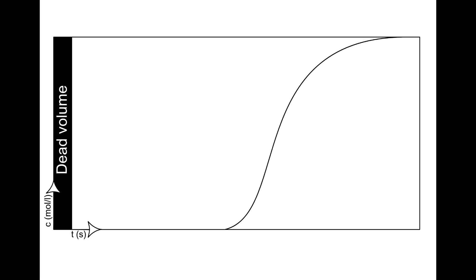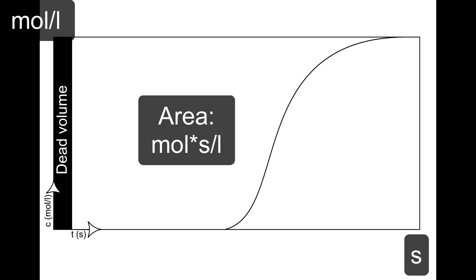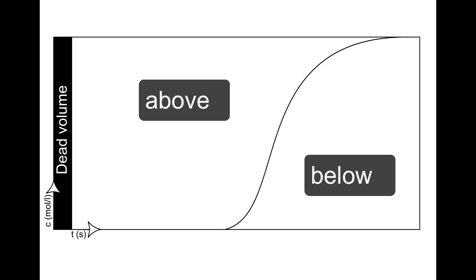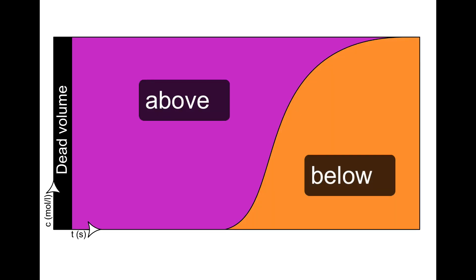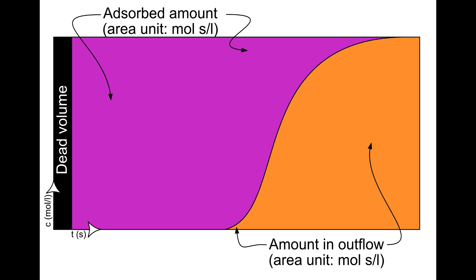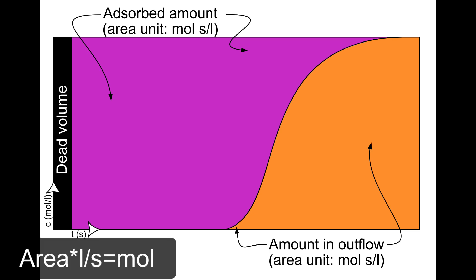In the graph you see here, the unit on the y-axis is mol per liter and the unit on the x-axis is seconds. Thus, the area unit in this graph is mol seconds per liter. The breakthrough curve divides the diagram into an area above the breakthrough curve and an area below it. The area above is proportional to the amount of substance absorbed in the column, and the area below is proportional to the amount of substance that has flowed out from the column.